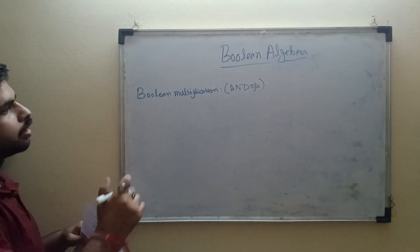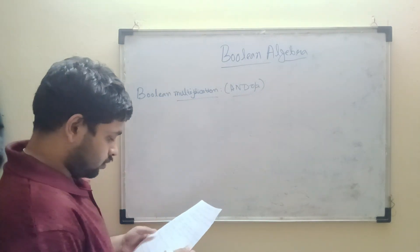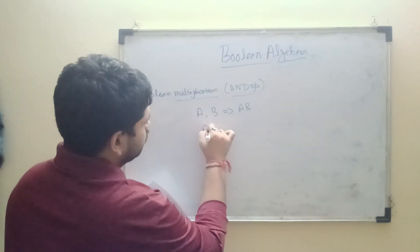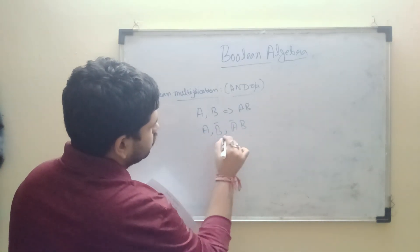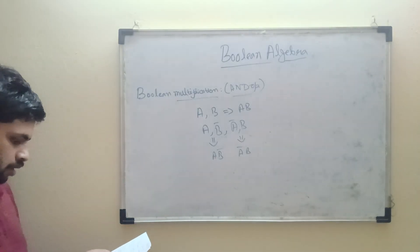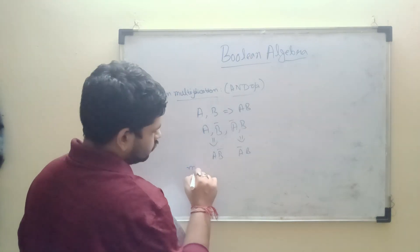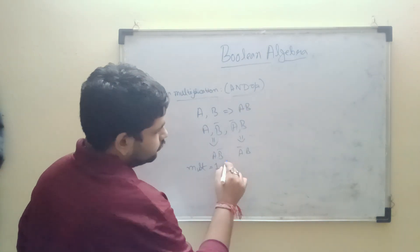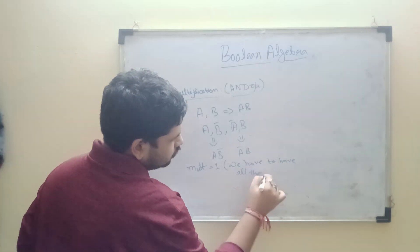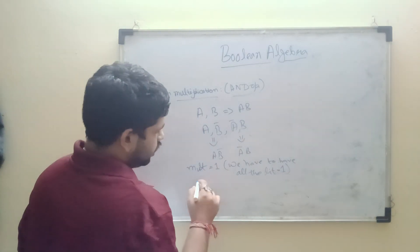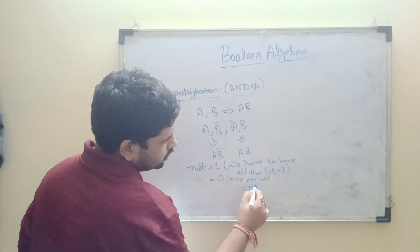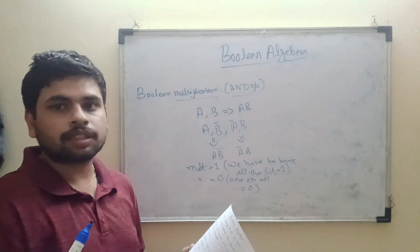Boolean multiplication is nothing but the AND operation. For literals A and B, it gives A·B. We can also have A·B̄ or Ā·B. To get a multiplication result of 1, all the literals must be 1. If any one literal is 0, the multiplication result will be 0.